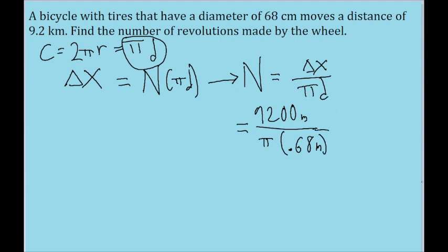And we just put that into our calculator, and we find an answer of about 4,300. So that many revolutions are made by the wheel.